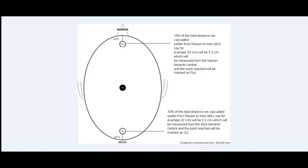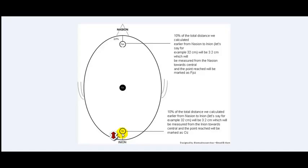10% of the total distance from nasion to inion — which we said is 32 centimeters, so 3.2 centimeters — will be measured from the nasion towards the central point, and the point reached will be marked as FPZ, or frontopolar zone. The same applies to the inion: we measure 10% of the total distance, which is 3.2 centimeters, and the point reached will be OZ, or occipital zone.